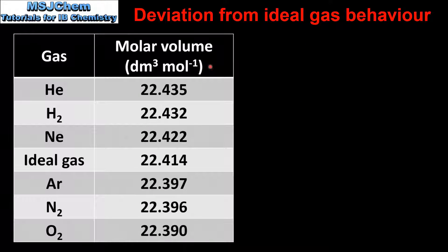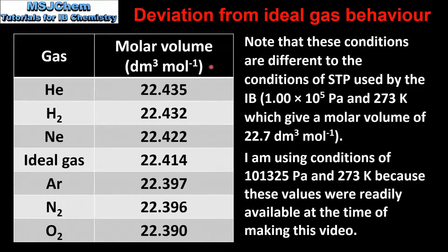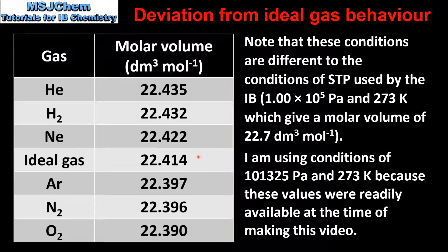In this table we have the molar volumes for a range of real gases as well as an ideal gas. For an ideal gas we have a value of 22.414 cubic decimetres per mole. If we look at the molar volumes for the real gases under these conditions, we can see that they are similar. This tells us that real gases behave almost ideally under these conditions. However, real gases deviate from ideal behavior at low temperatures and high pressures, which we'll look at next.